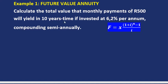Calculate the total value that monthly payments of 500 rands will yield in 10 years' time, if invested at 6.2% per annum, compounding semi-annually. We have to factor that in.